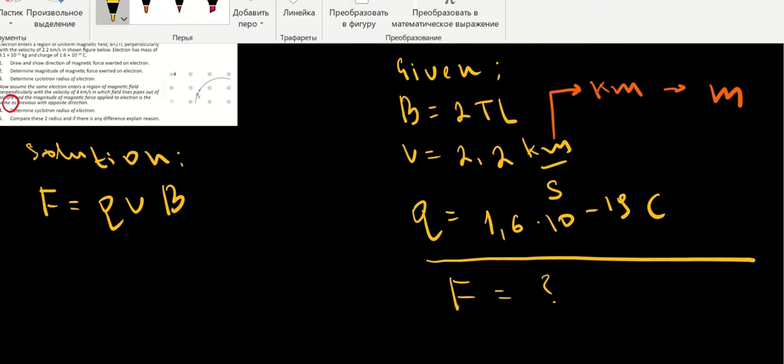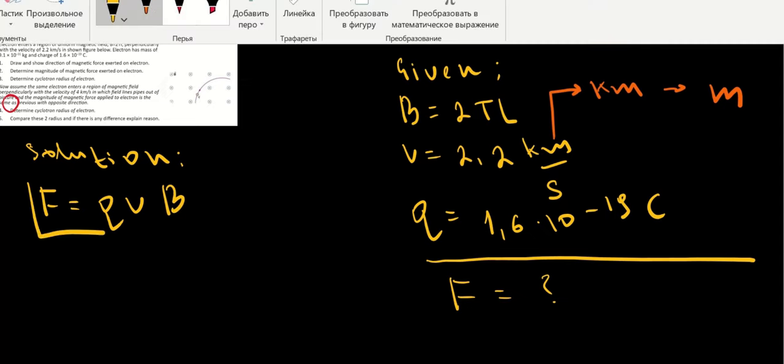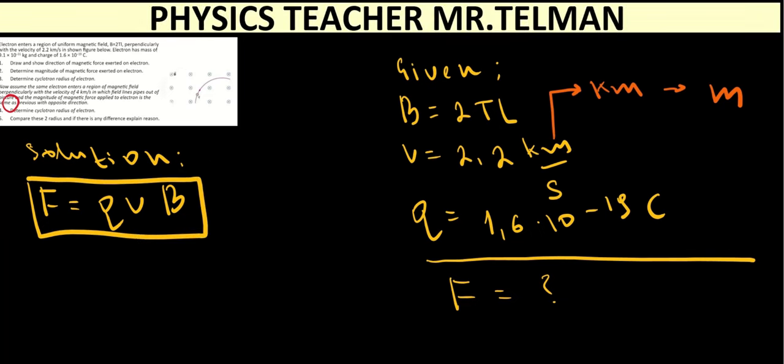Then we will get F equal to 1.6 multiplied by 10 to the power of minus 19 coulomb. Multiplied by the V. 2.2 kilometers. Multiplied by 1,000 meters per second. And then multiplied by the B. Value of the B is 2 Tesla.